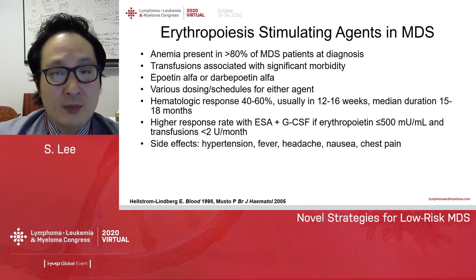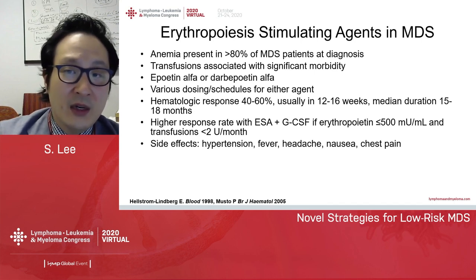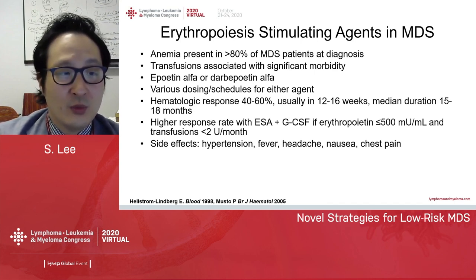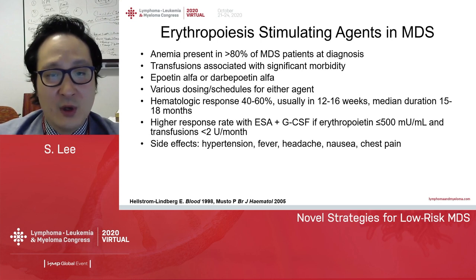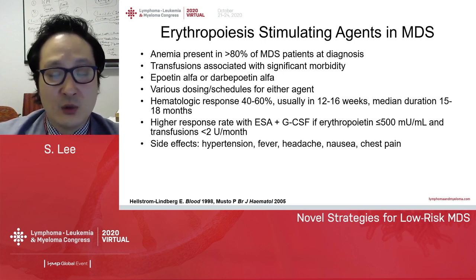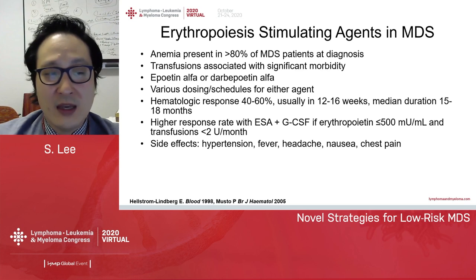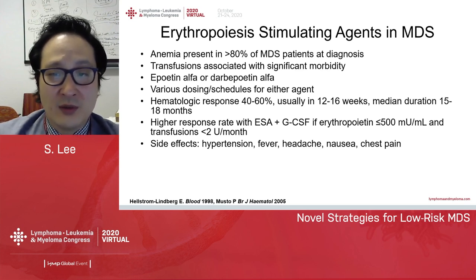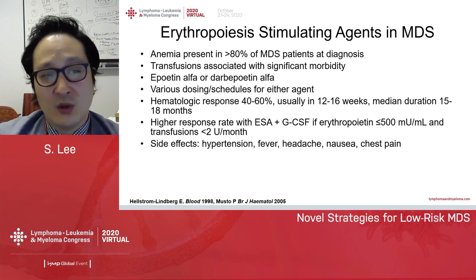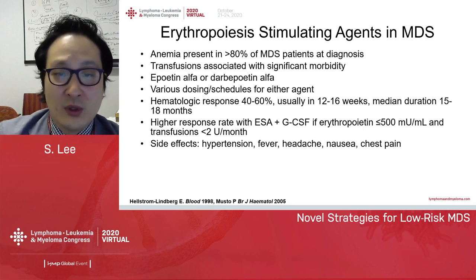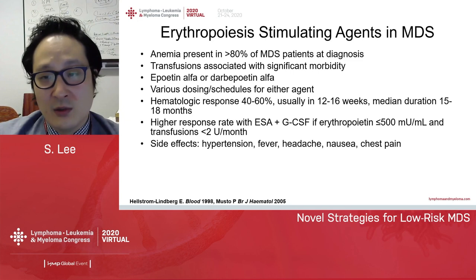Anemia is present in about 80% of patients with MDS at diagnosis. Anemia, as well as transfusion support, is associated with significant morbidity. There are a number of erythropoiesis-stimulating agents available in MDS. Most commonly used agents are either darbepoetin or epoetin-alpha. In our clinic, we typically utilize darbepoetin-alpha, which can be given every two weeks and can be dose-escalated based on response. Hematologic response occurs in about 40% to 60% of patients, usually in 12 to 16 weeks, with median duration of 15 to 18 months.